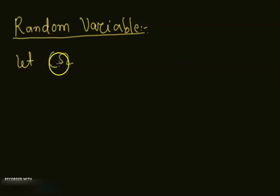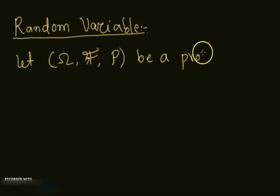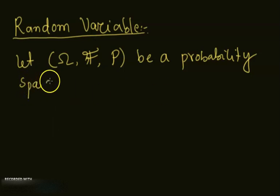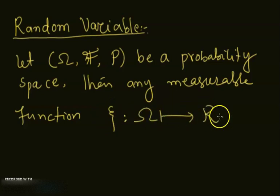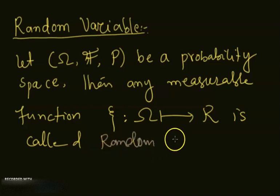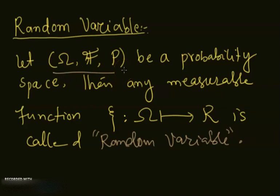Let (omega, calligraphic F, P) be a probability space. Then any measurable function x_i from omega to R is called a random variable. So if you have a measurable function on a probability space, then it is going to be a random variable.